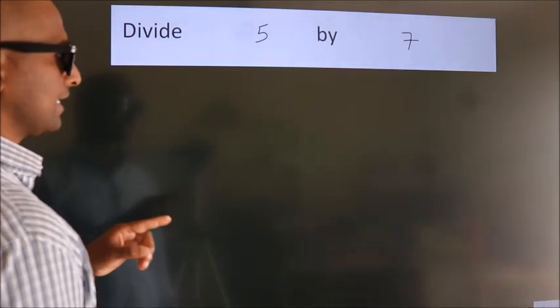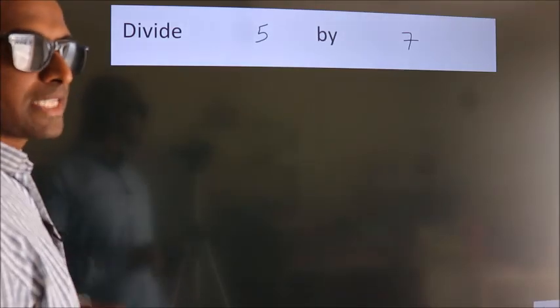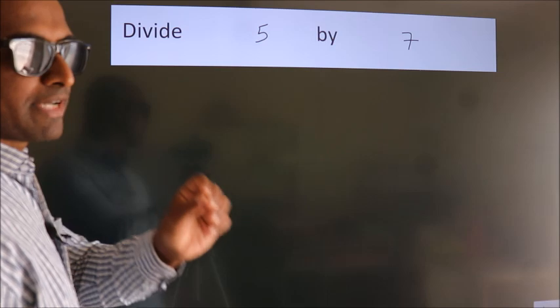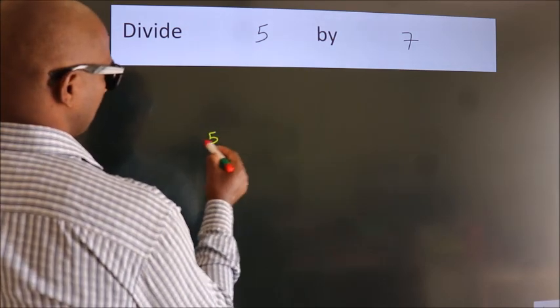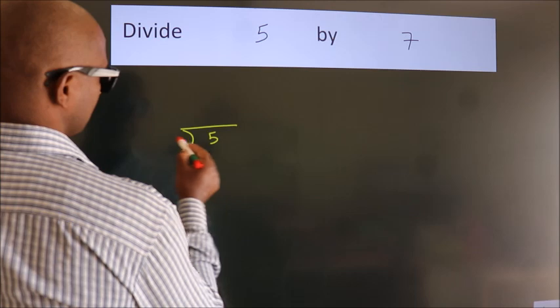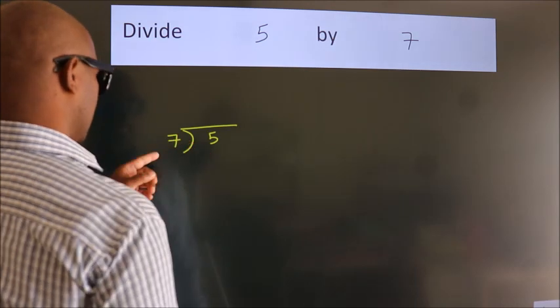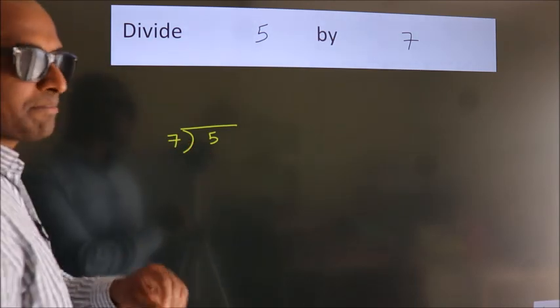Divide 5 by 7. To do this division, we should frame it this way: 5 here, 7 here. This is your step 1.